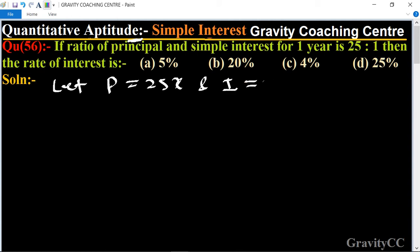And time is given as one year. So what is the rate of interest? We know that the formula of rate of interest is equal to I times 100 upon P times T.